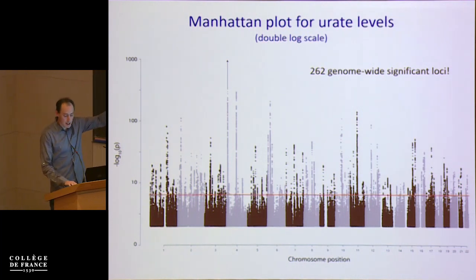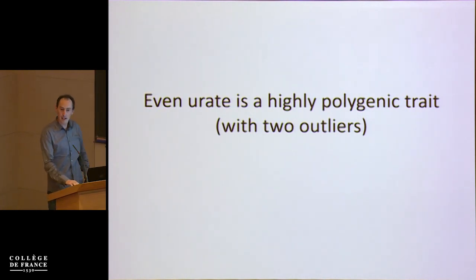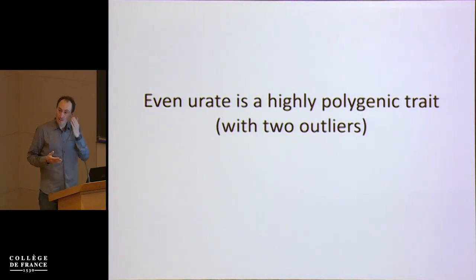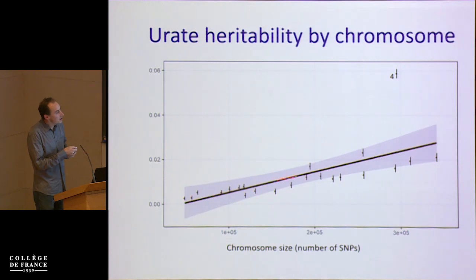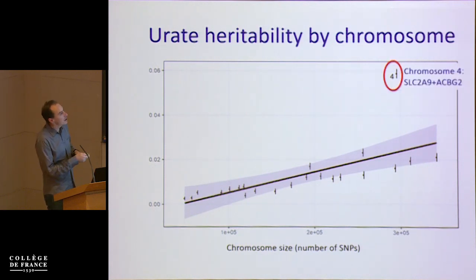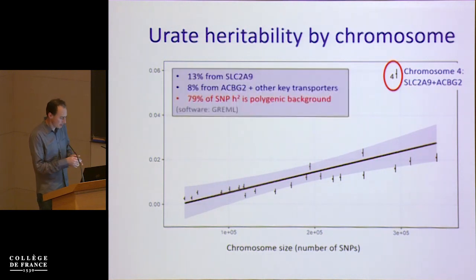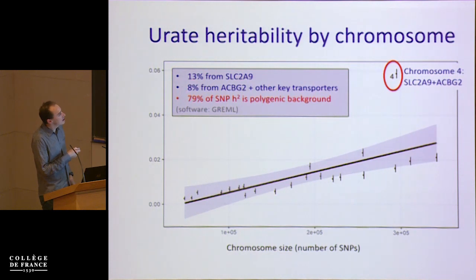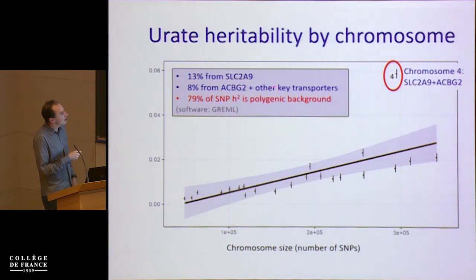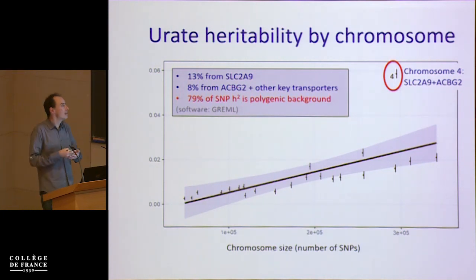Setting aside those two outlier transporters, it's clear that urate is nonetheless a very highly polygenic trait. We can make the same kind of chromosome-heritability plot as for schizophrenia and rheumatoid arthritis. Again, you can predict how much heritability comes from each chromosome quite accurately simply from chromosome size. The one outlier is chromosome 4, because by chance both major transporter genes are on chromosome 4. The SLC2A9 gene contributes about 13% of heritability, with an additional 8% from the second hit, but nearly 80% of estimated SNP heritability comes from the polygenic background.